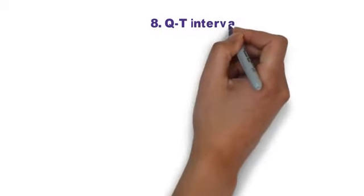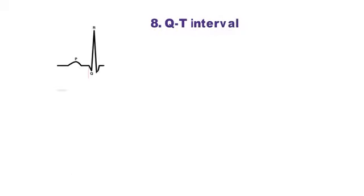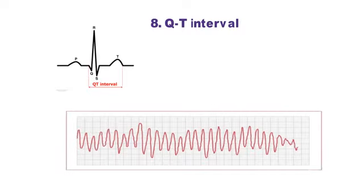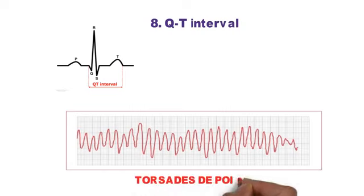Step 8 is QT interval, measured from the start of the Q-wave to the end of the T-wave. As a rule of thumb, normal QT is less than half the preceding RR interval. An abnormally prolonged QT is associated with increased risk of ventricular arrhythmias, especially torsades de pointes.